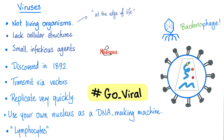Viruses are not living organisms. They are considered at the edge of life — in between life and non-life. Why? They lack cellular structures, cannot replicate independently, and don't always have DNA — sometimes they have RNA. They are small infectious agents, discovered in 1892, transmitted via vectors, and replicate very quickly. Hashtag go viral — everyone's trying to go viral, no one is trying to go bacterial.